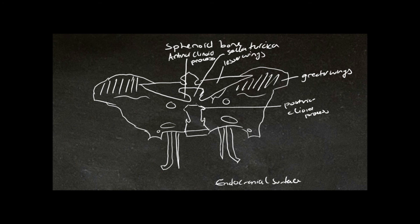We have a ramp-like structure behind this part of the sphenoid bone, and this is referred to as the dorsum sellae.